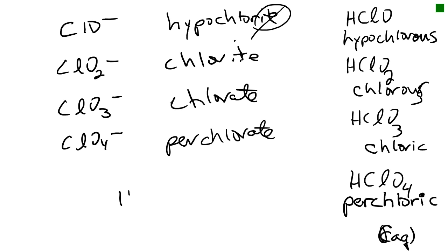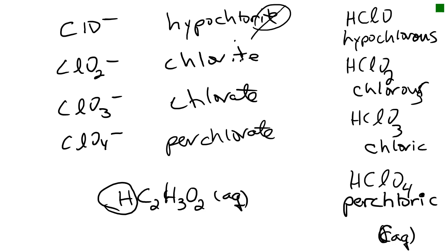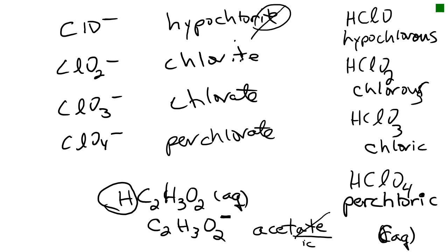Finally, name HC2H3O2 aqueous. The H in front is our acidic hydrogen, which tells us the anion is C2H3O2-, a charge of minus one. This is one of our memorized irregular anions — acetate. Since -ate becomes -ic, we call this acetic acid. This is the acid found in vinegar. That covers molecules and acids.